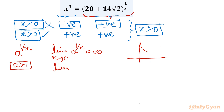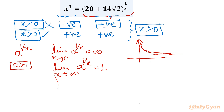Checking the end behavior: as x tends to infinity, a^(1/x) = a^0 = 1, so the value tends towards 1. The RHS graph decreases from infinity toward 1. The LHS, x³, is a monotonically increasing cubic polynomial going from −∞ to +∞. From the graph we conclude there is exactly one single solution.